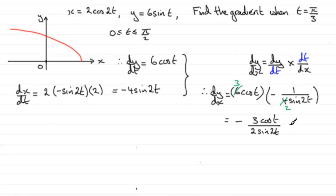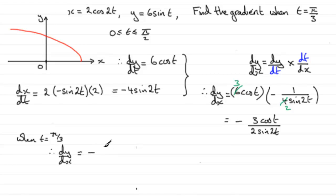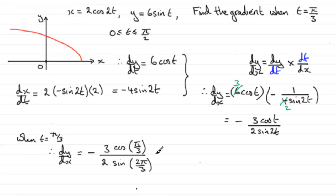When it comes to finding the gradient, all we need to do is substitute t equals π/3 into here. Therefore, dy/dx when t equals π/3 is minus 3cos(π/3) all divided by 2 multiplied by sin(2π/3). Working that out, you get exactly minus √3 over 2. So there's your gradient when t equals π/3.